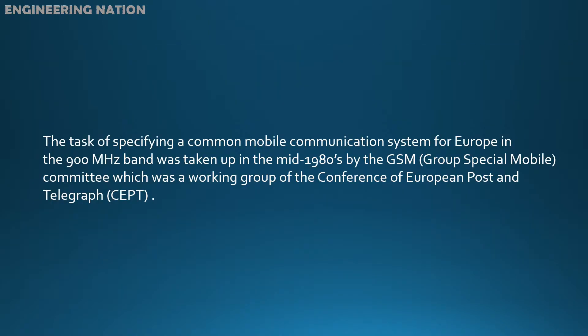The task of specifying a common mobile communication system for Europe in the 900 MHz band was taken up in the mid-1980s by the GSM Group Special Mobile Committee, which was a working group of the Conference of European Post and Telegraph.